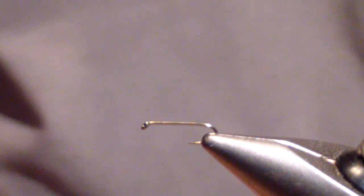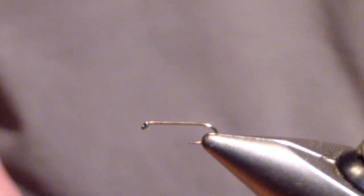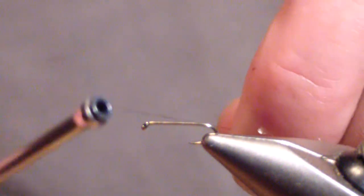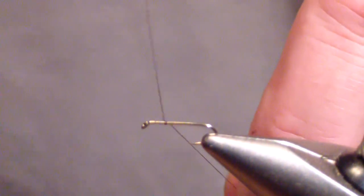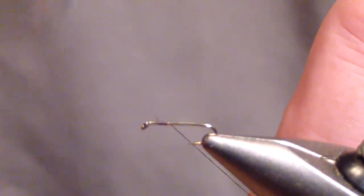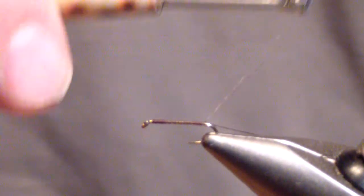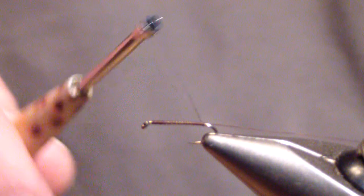I start out with a size 16 dry fly hook and brown uni-thread. I'll build my thread base and bring my thread back to about the point of the hook and leave the tag. Then I'll bring my thread back to the middle of the shank.